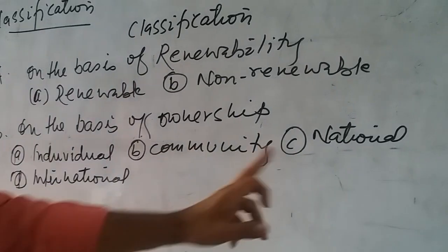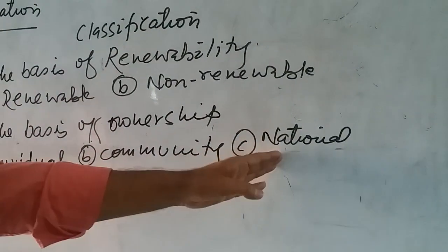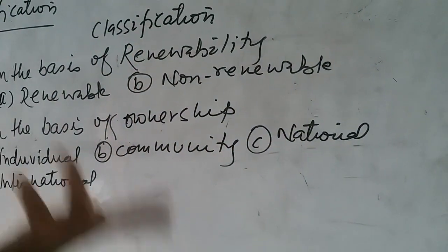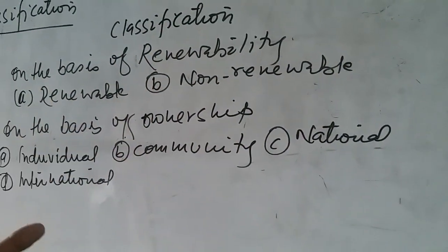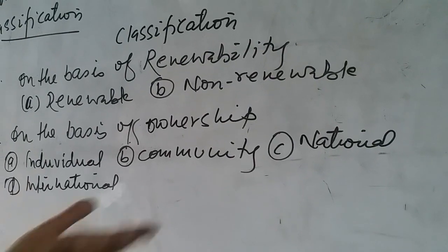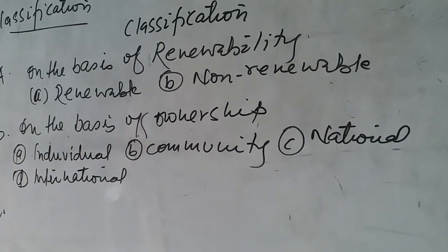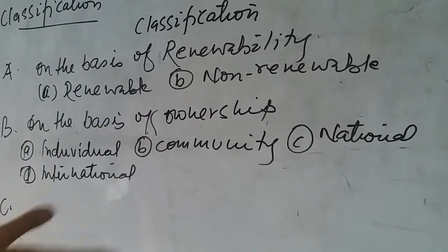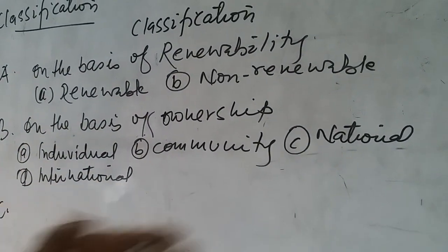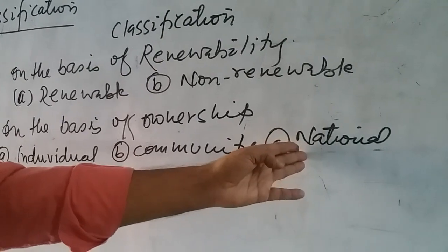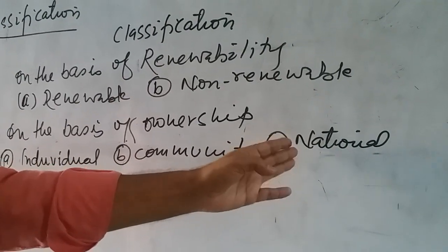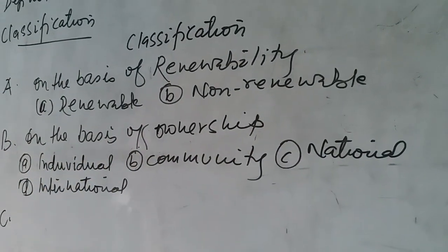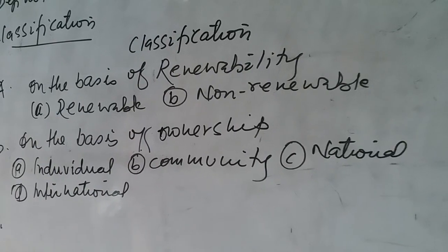National resources are under the control of the nation, like rivers, natural vegetation, forests, minerals. These are the national resources, which can be used only by the nation, not by an individual, not by a community.